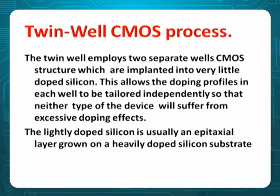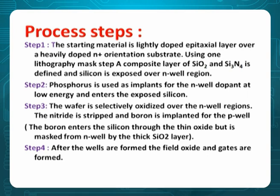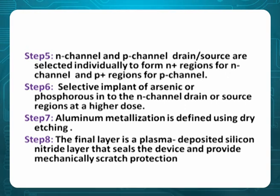Twin-well means a combination of N-well and P-well — it is automatically CMOS. The steps are: Step 1 — take a substrate; Step 2 — perform phosphorous implantation; Step 3 — select wafer with an oxidation layer; Step 4 — use the oxidation layer as a gate; Step 5 — P and N channel source and drain are selected and source/drain elements are prepared; Step 6 — apply a phosphorous layer; Step 7 — aluminum is used for metallization; Step 8 — final plasma-deposited silicon layer. The same steps done for N-MOS and P-MOS separately are done together in CMOS.